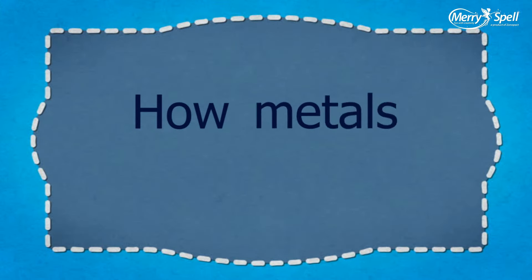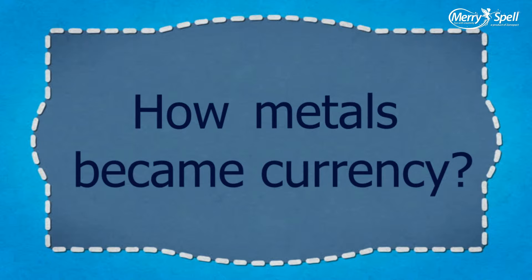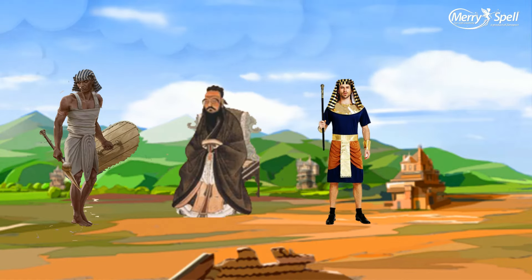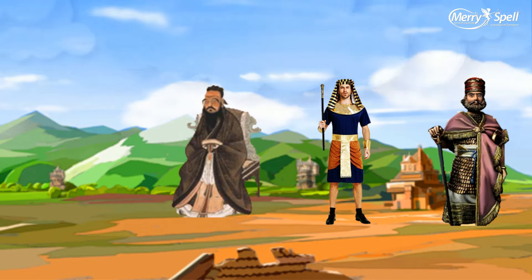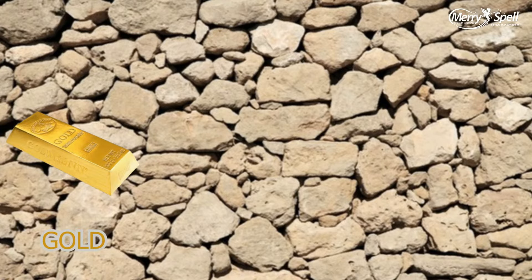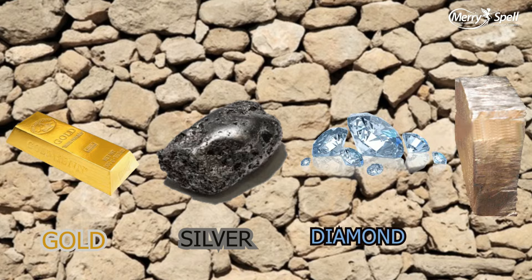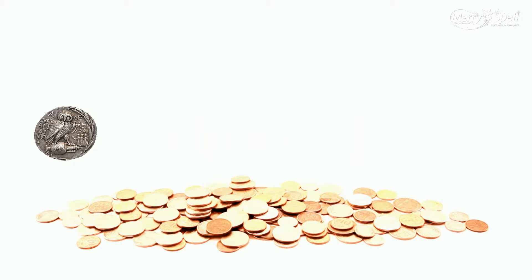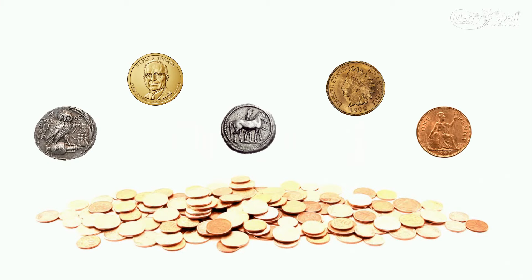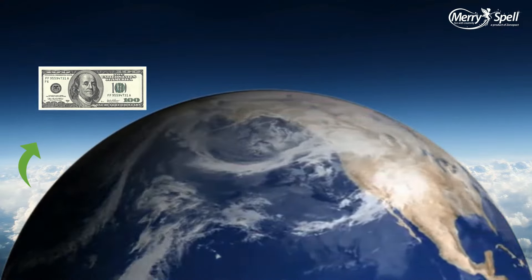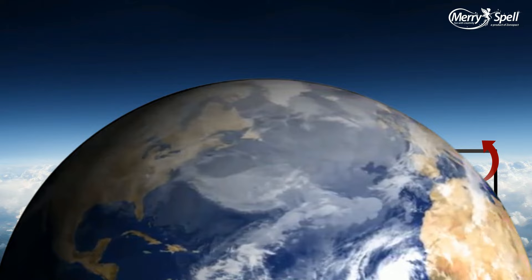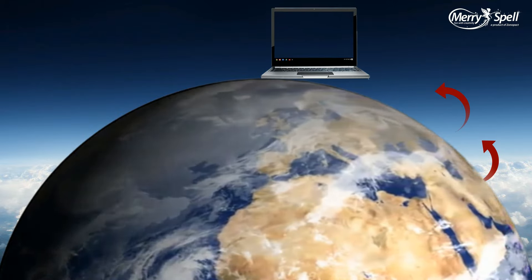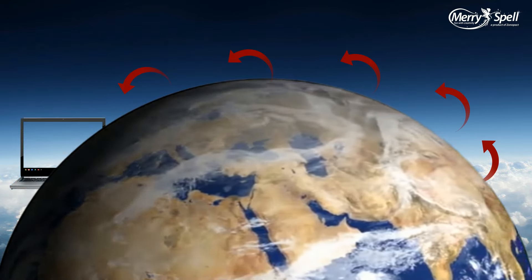How did metal become currency? As civilizations evolved, the most valuable thing available to make currency was metal — gold, silver, diamonds, and platinum. These valuable metals were recognized as precious throughout the world and made way for long-distance trade and the modern monetary system that uses fiat paper currency.